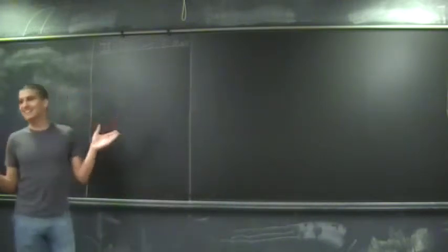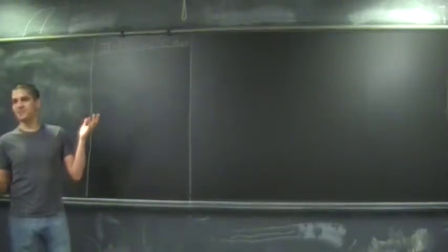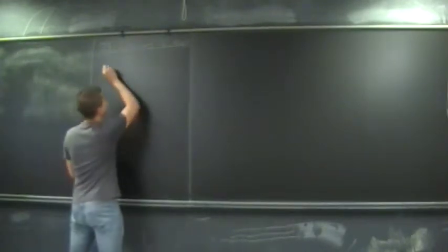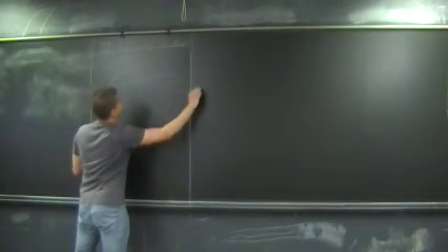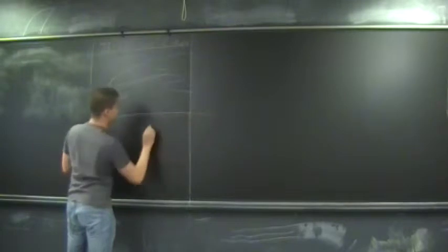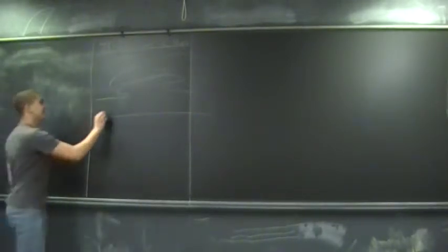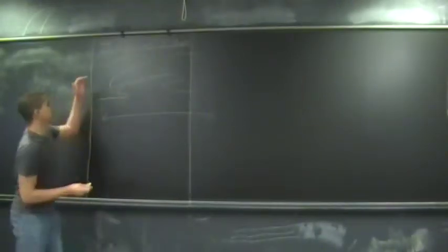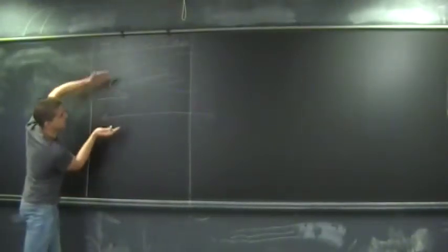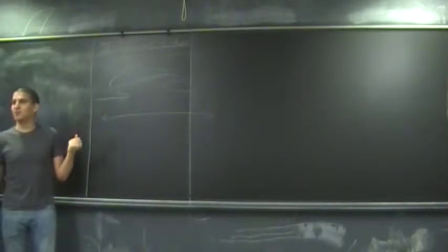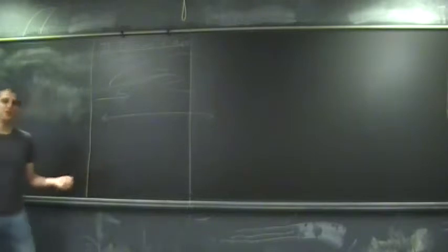The first idea I want to get to is divisors. To motivate this, let's say we've got a curve, and we've got another curve down here which is just a P1 — a line — and there's a map between them, which we can think of as projecting away from an axis. The objects I'm going to define, called divisors, should be thought of as fibers of maps of curves.